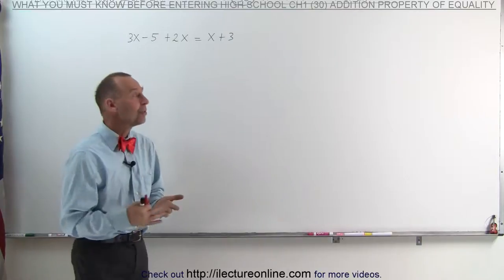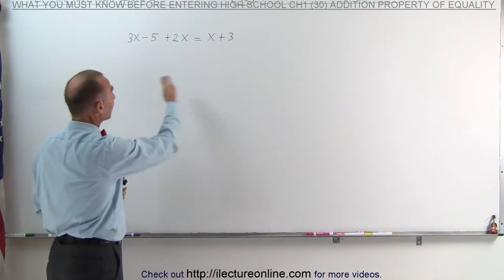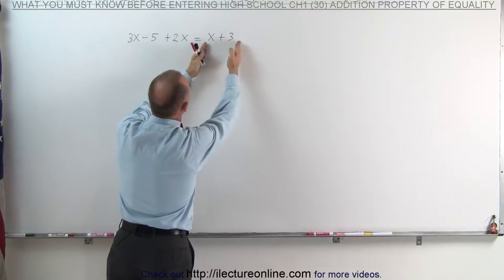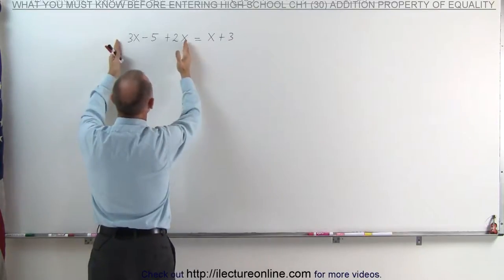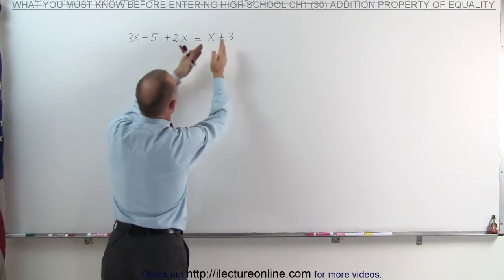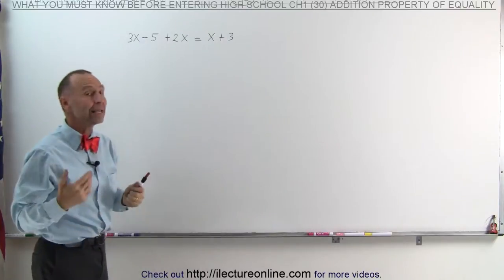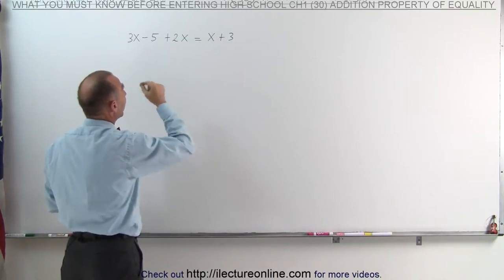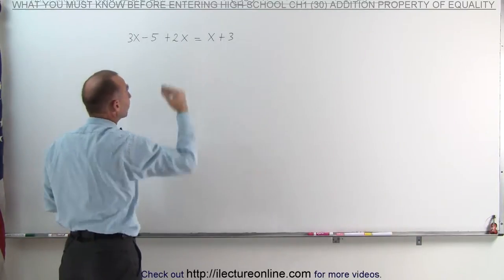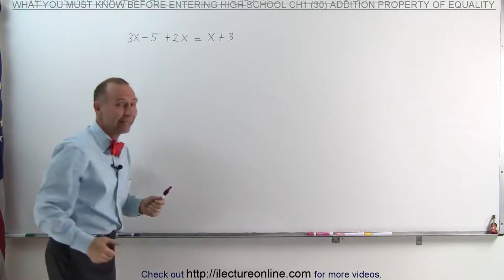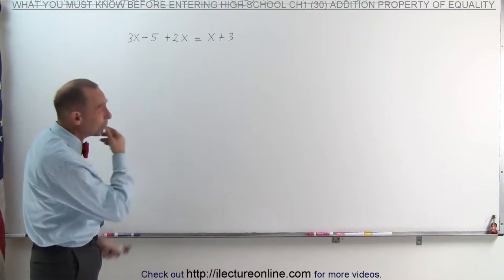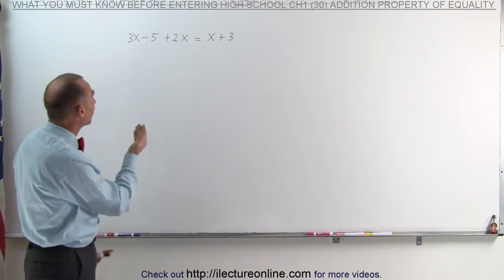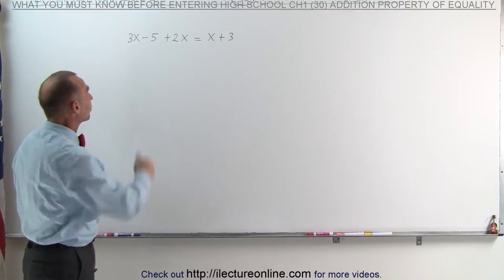When you have an equation — and here's an example of an equation — there's a left side, there's an equal sign, and there's the right side, which means that the left side equals the right side. We need to find the correct value for x such that the left side equals the right side. The way it's written here, it would be kind of difficult to guess what the right value for x would be.